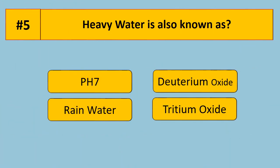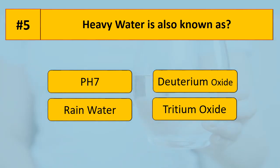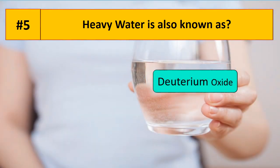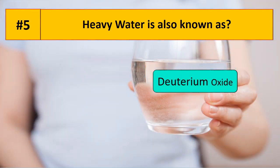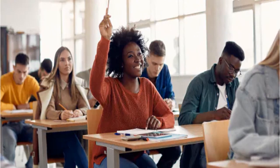Question 5. Heavy water is also known as? Deuterium oxide is another name for heavy water.